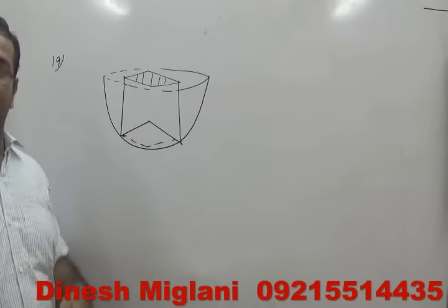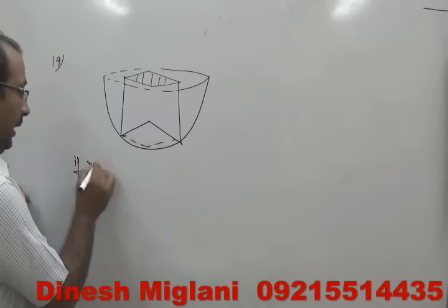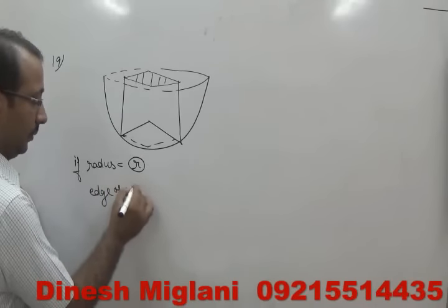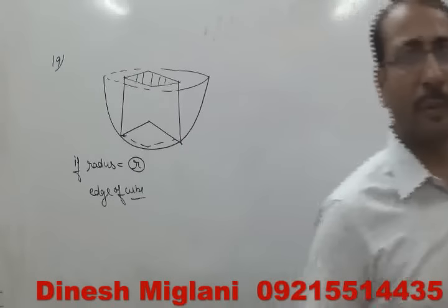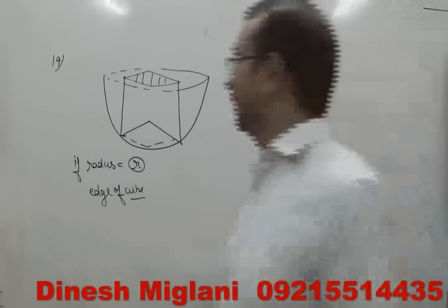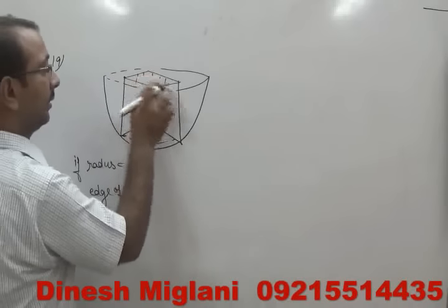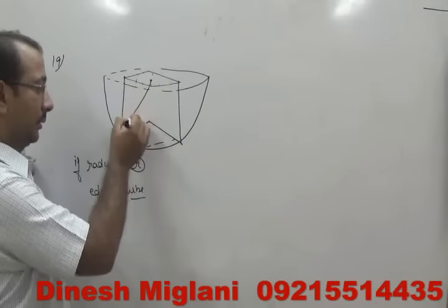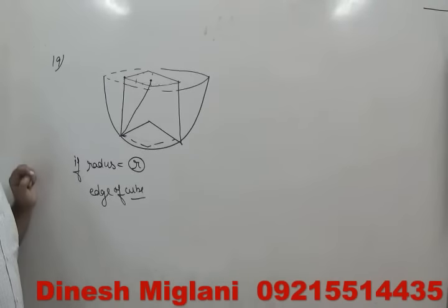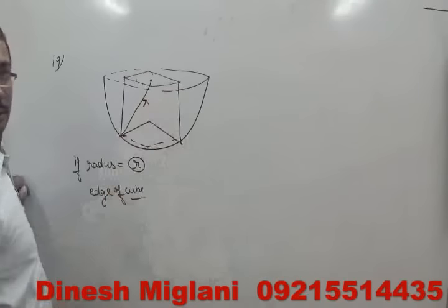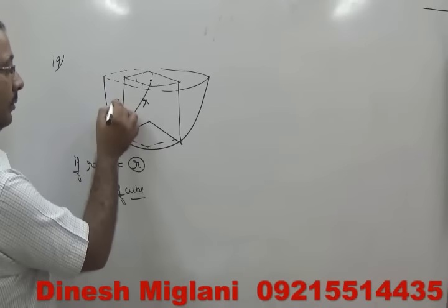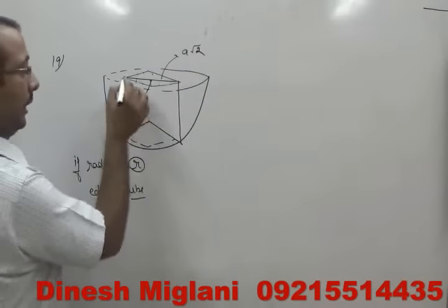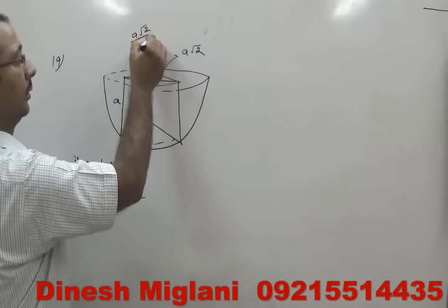Let the side of the square be x. The portion above the square has height (8 − x), and the top side of the square has length x. Since the top side is parallel to the base, by similar triangles the ratio (8 − x)/8 = x/21. Cross-multiplying: 21(8 − x) = 8x, so 168 − 21x = 8x, giving 29x = 168.